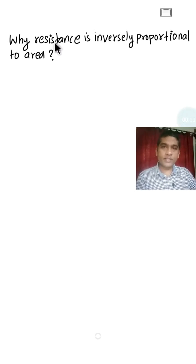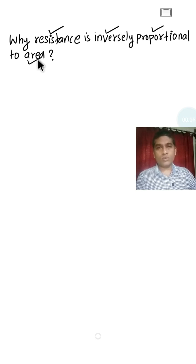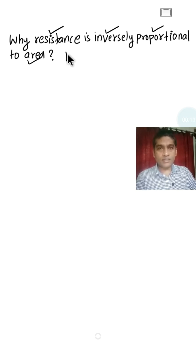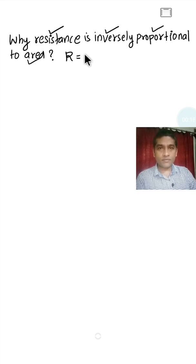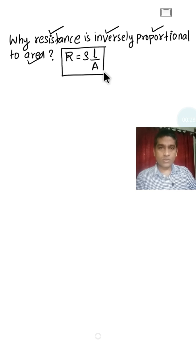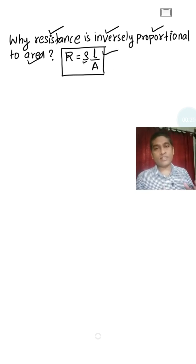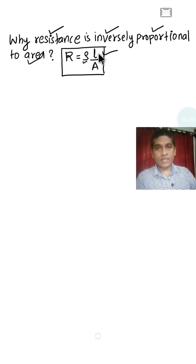Hello everyone. Today, I am going to explain why resistance is inversely proportional to the area. We know resistance is given by the expression where rho is the specific resistance or resistivity of the material used or the conductor, L is the length, and A is the area.